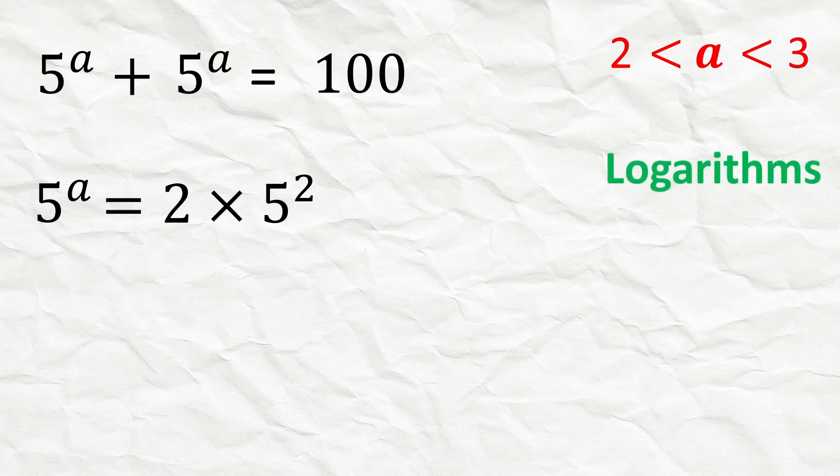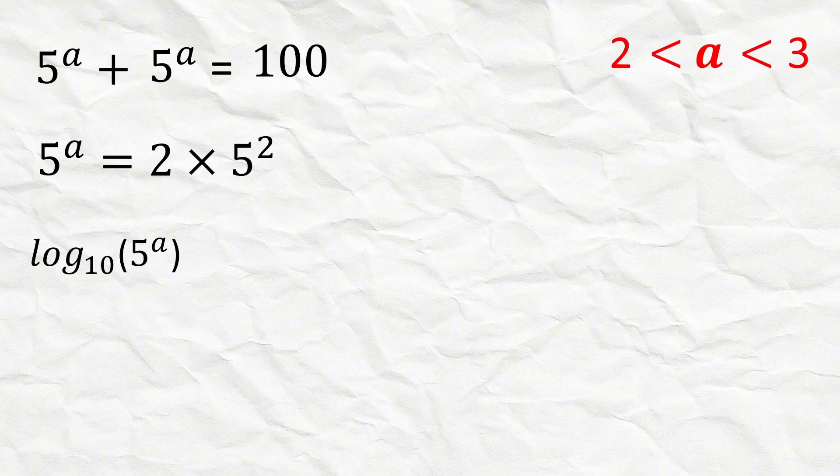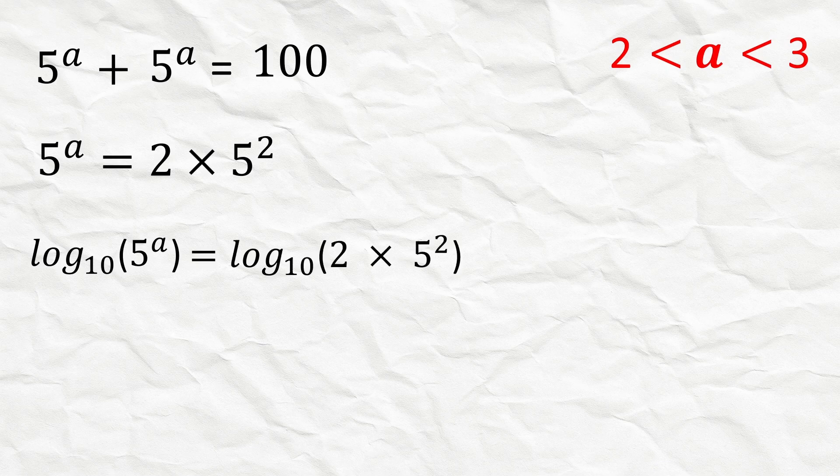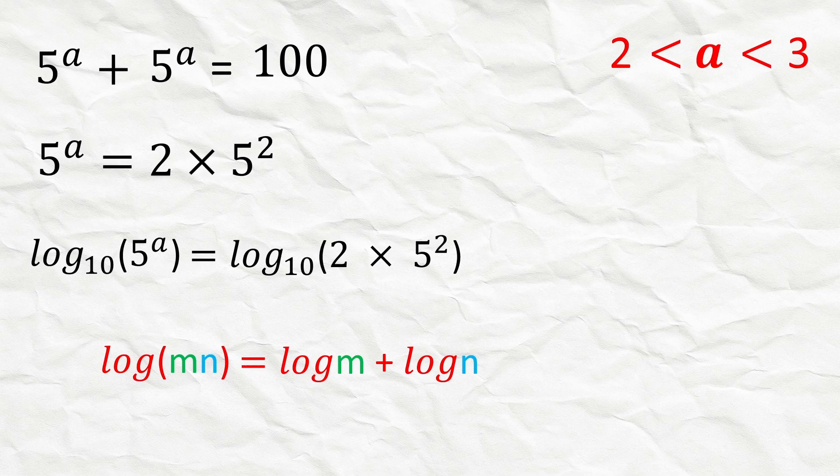Taking logarithm with base 10 on both sides of this equation, we get log 5 raised to a equals log 2 times 5 squared. First we will use a logarithm rule where log 5 times n equals log 5 plus log n.